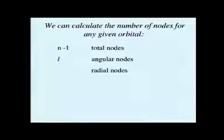We can actually calculate both the total number of nodes and the number of each type of node we should expect to see in any type of orbital. Our equation for total nodes is just the principal quantum number minus one. And when we talk about angular nodes, the number of angular nodes we have in an orbital is going to be equal to l.